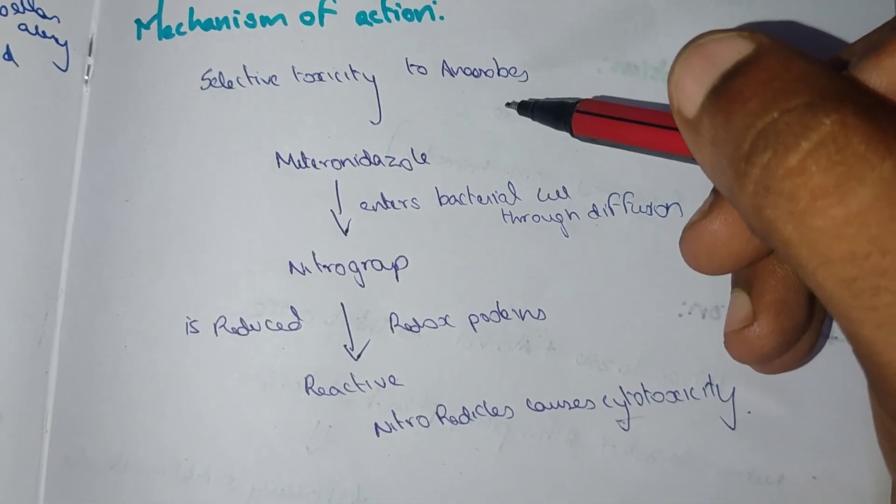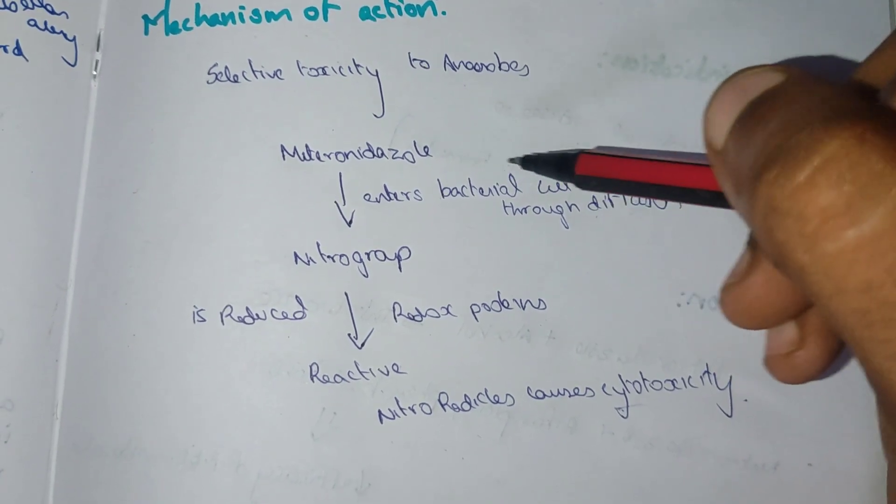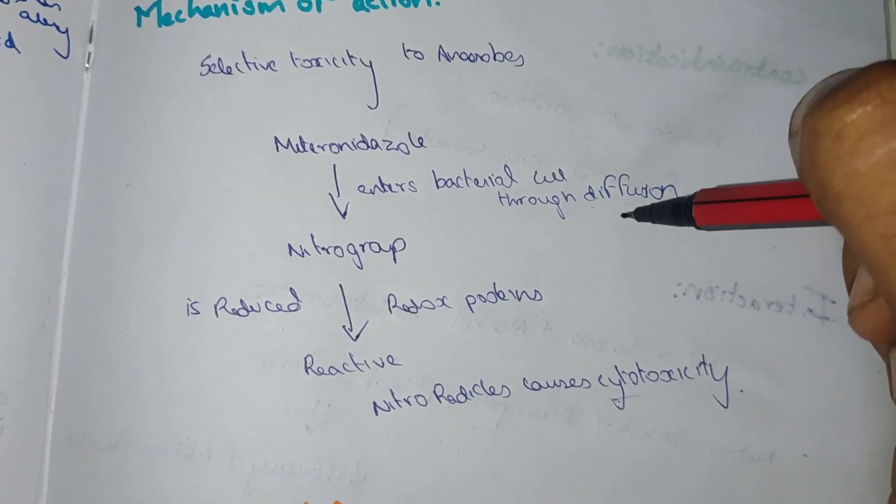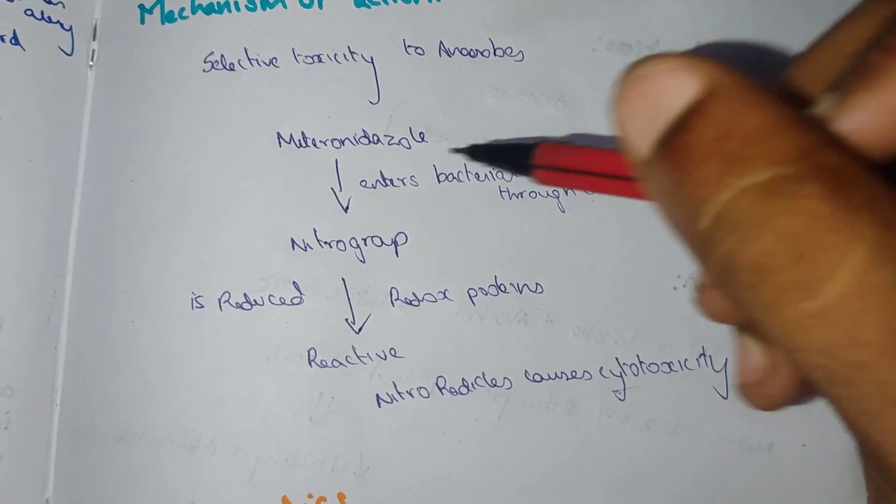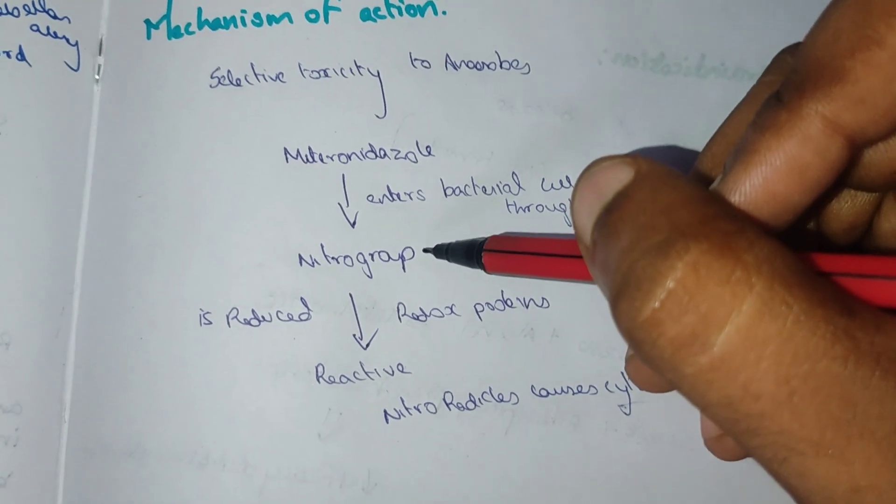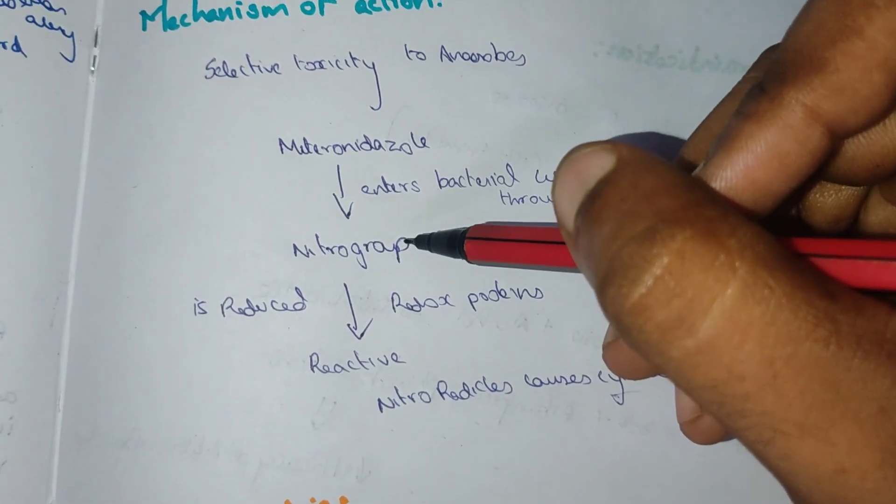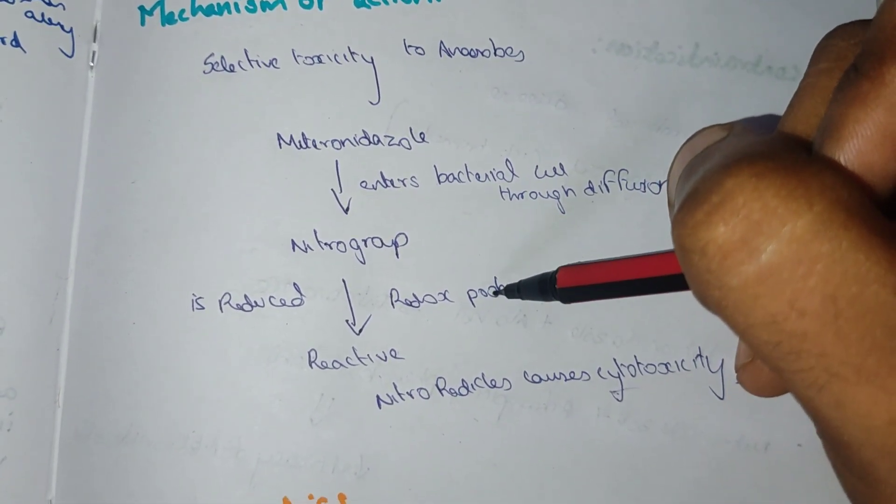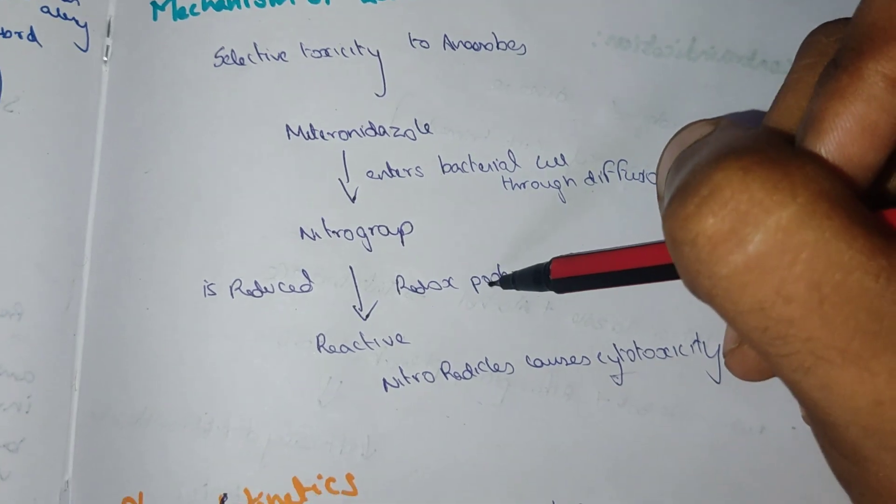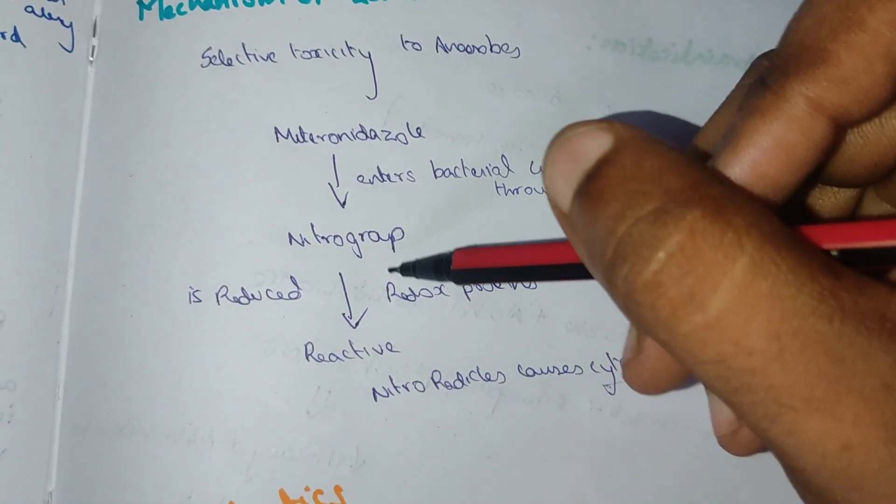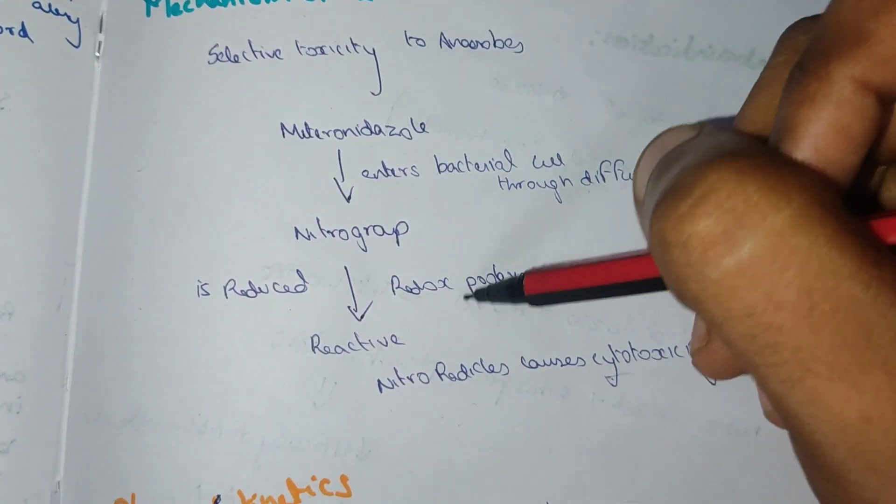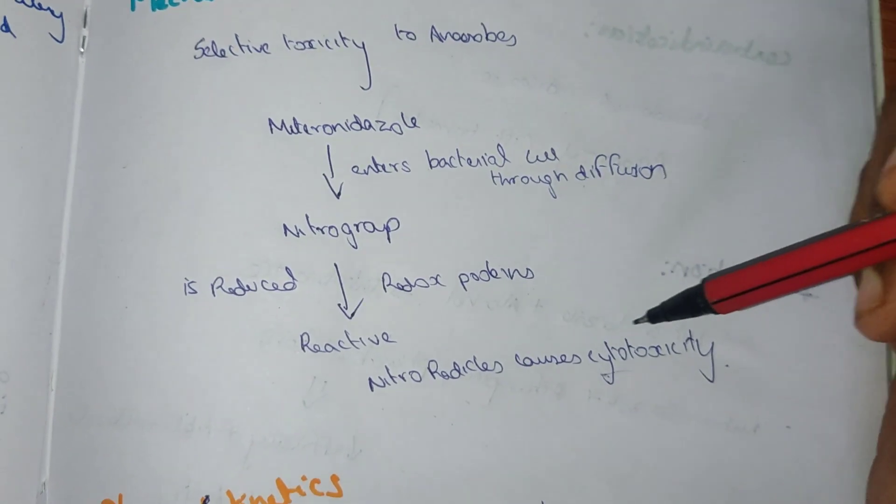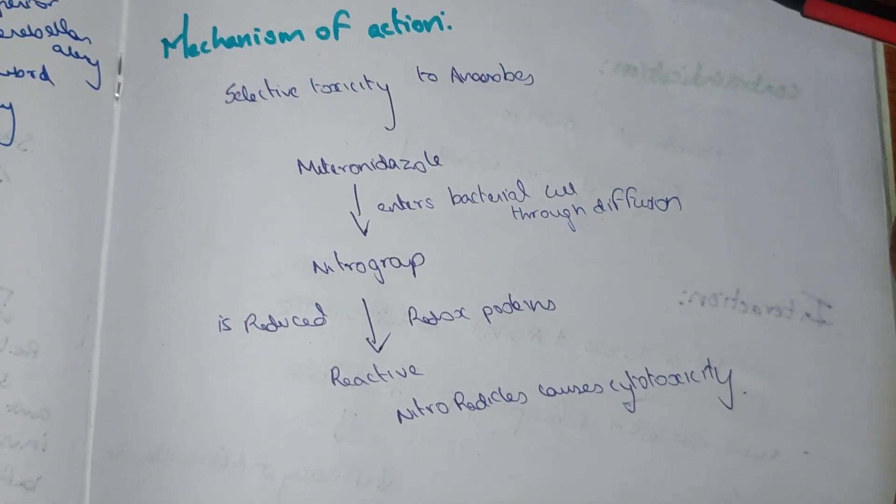The mechanism of action is selective toxicity to anaerobes. Metronidazole enters the bacterial cell through diffusion. It has a nitro group within it, and this nitro group is reduced by the redox protein, which is present in anaerobes bacteria alone, not in aerobes, into reactive nitro radicals. This causes cytotoxicity. This is the mechanism of metronidazole.